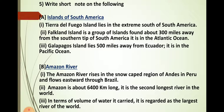The next short note is on the Amazon River. The Amazon River rises in the snow-capped region of the Andes in Peru and flows eastward through Brazil. The Amazon is about 6,400 km long. It is the second longest river in the world. In terms of volume of water it carries, it is regarded as the largest river in the world.